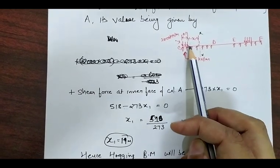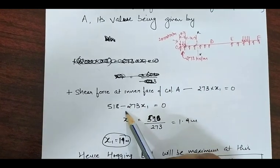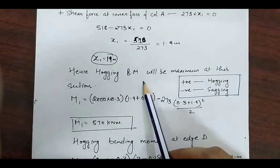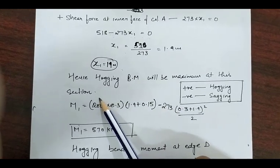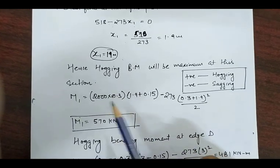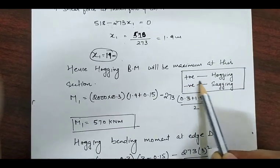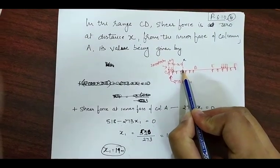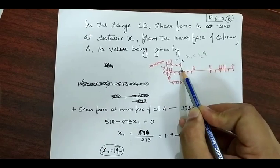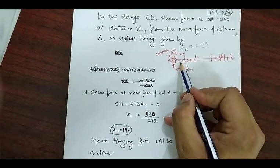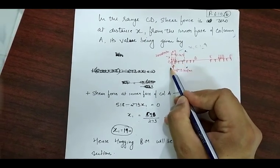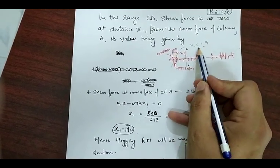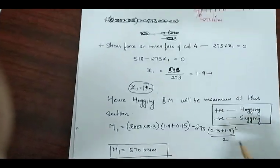The upward soil pressure is 273 kilonewton per meter, so in the upward direction minus 273 into x1 equals zero. Hence the hogging bending moment will be maximum at this same section. At x1 equal to 1.9m, looking at the left-hand side of this point, the downward load produces hogging and the upward soil pressure also produces hogging, so hogging is taken as positive and sagging as negative. M1 is calculated at this section.